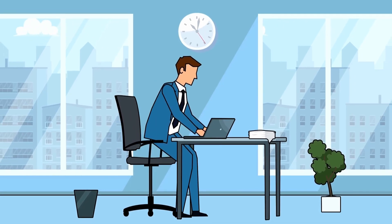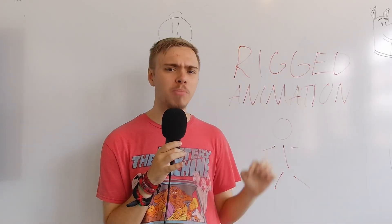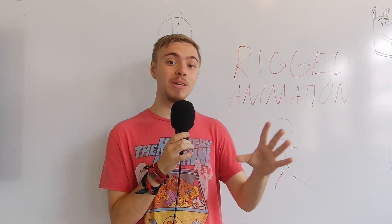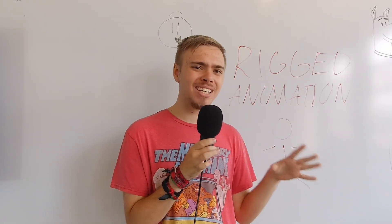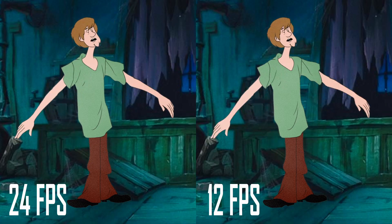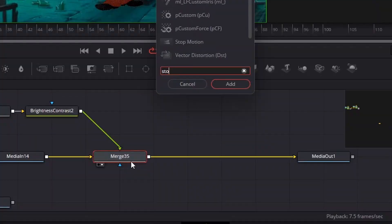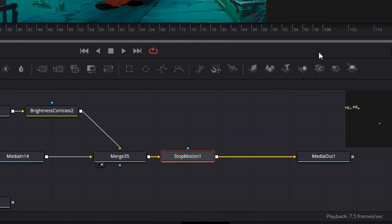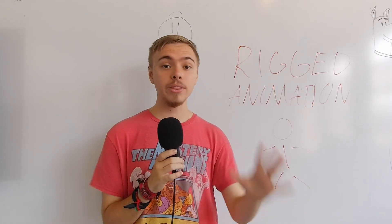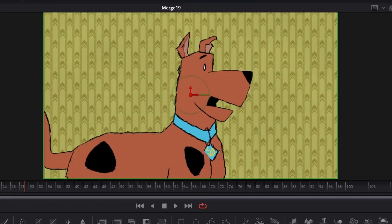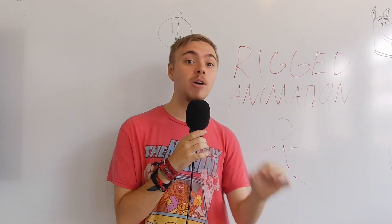Now rigged animation has a tendency to look kind of cheap and corporate by default, so I wanted to find some ways to give it more life and make it look more polished. By default the animation was in 24 frames per second, which looks really smooth. But classic animations were typically done at around 12 frames per second. So I added a stop motion node at the end of my node tree and set it to 2, so it holds every frame twice, giving it that 12 frames per second look. I also figured out a way to add lighting to the characters so that it looks like they're in the environment, and I'll have a video going into more detail on that coming out soon.